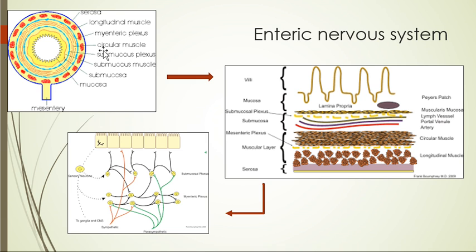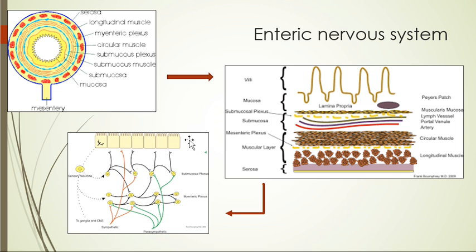Between the longitudinal and circular muscle layers there are two plexuses — the myenteric plexus and the submucosal plexus — which coordinate gut movements. The innermost layer is the mucosa. The submucosal plexus innervates the epithelium. Interneurons within these plexuses can inhibit or stimulate each other to control different muscle activity.